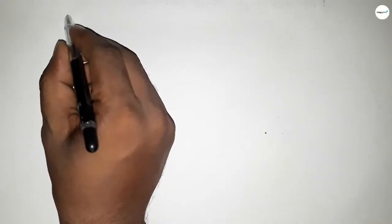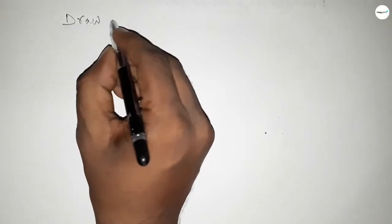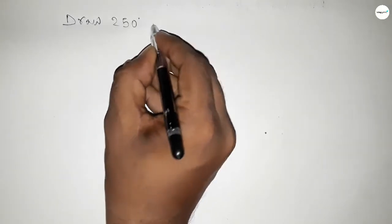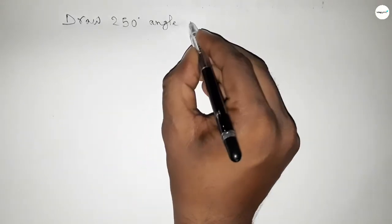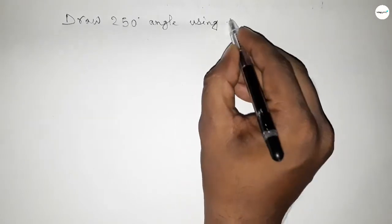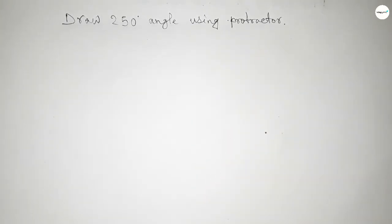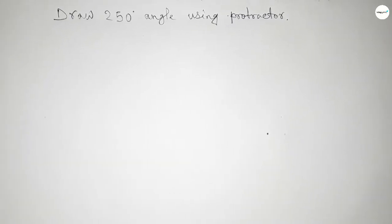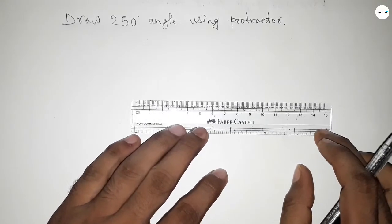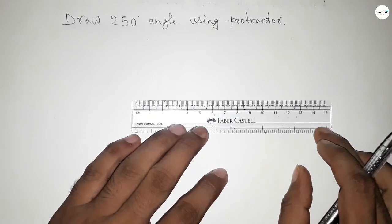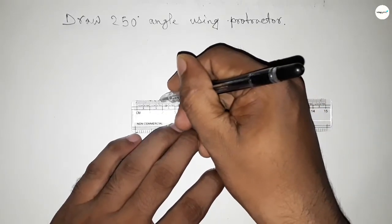Hi everyone, welcome to SSR Classes. Today in this video we have to draw a 250 degree angle using a protractor. So let's start the video. First of all, we have to draw a straight line here.